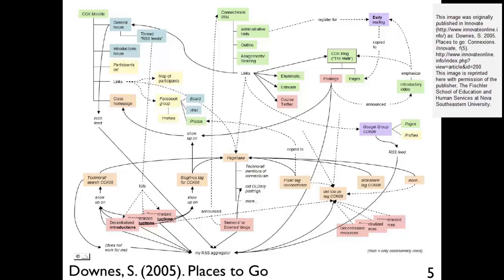First, make a list of all the technologies being used in this course. You can use the article titled Places to Go: Connectivism and Connective Knowledge to help you understand this figure. Stop this video for the time that you need to write down your list. Here is the analysis in a nutshell. The course starts with a blog. That blog is the home base or the hub for the course. From this blog, the professor, Stephen Downes, posts some entries that are linked to the class homepage.